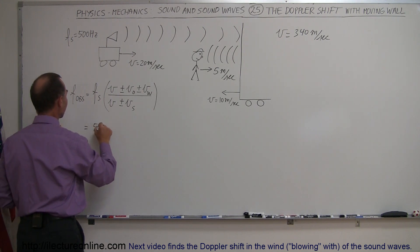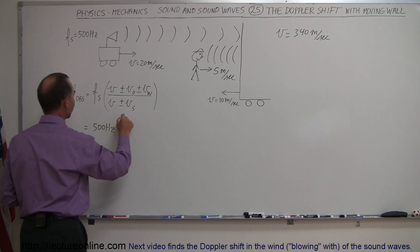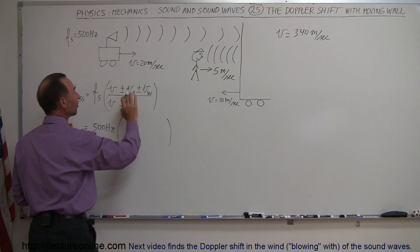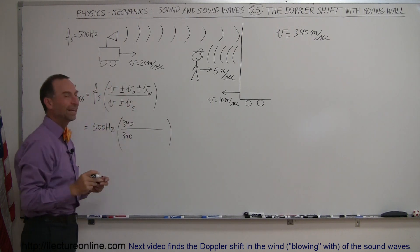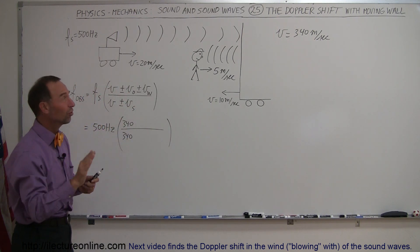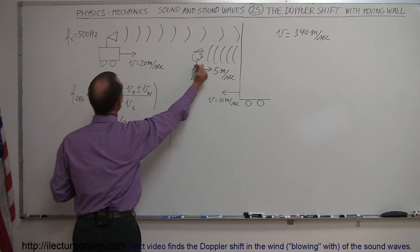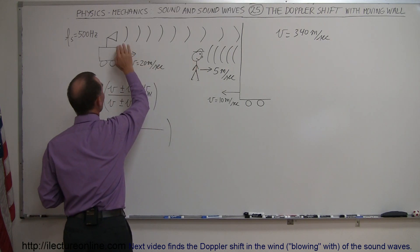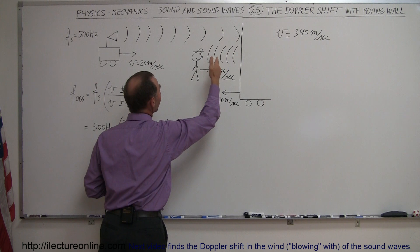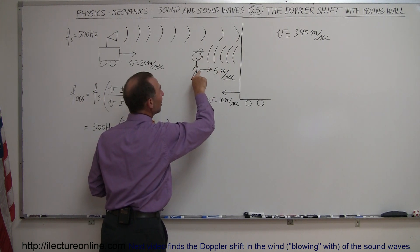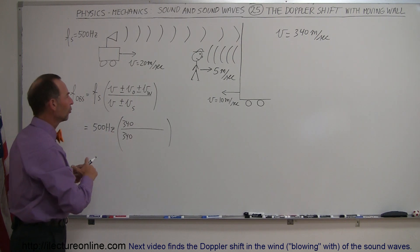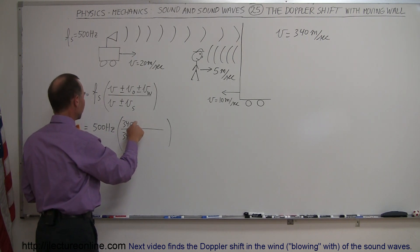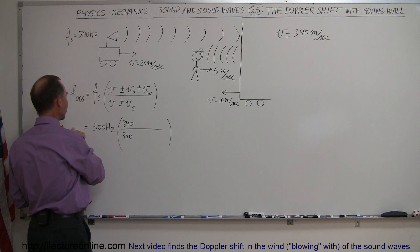Well, this is equal to 500 hertz times the velocity of sound is given as 340 meters per second. There we go, 340. Now, the observer is moving towards the sound, even though he's not moving towards the source, since the sound is bouncing off the wall, it is as if he's moving towards the source. And that would cause the frequency to be higher.